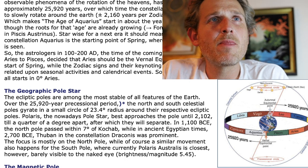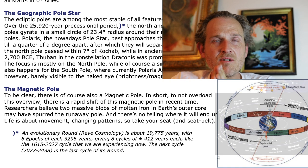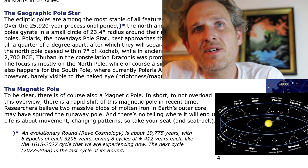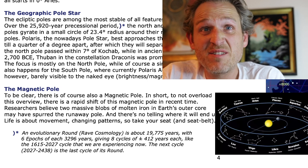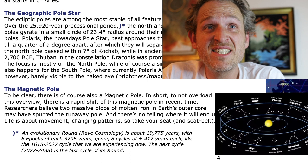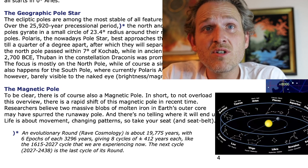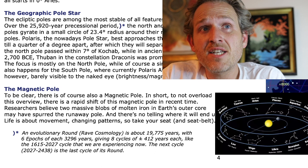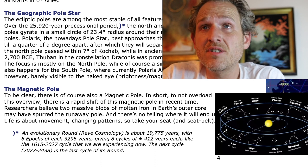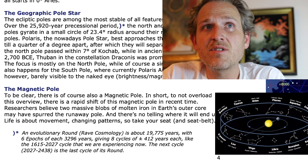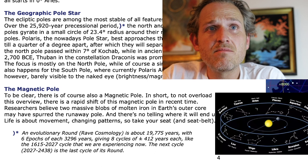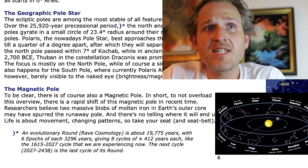The Geographic Pole Star. The ecliptic poles are among the most stable of all features of the Earth. Over the 25,920-year processional period, an evolutionary round in Rave cosmology is about 19,775 years, with six epochs of each 3,296 years, giving eight cycles of approximately 412 years each — like the 1615 to 2027 cycle that we are experiencing now. The next cycle, 2027 to 2438, is the last cycle of its round, so we're entering into the last cycle of the round.